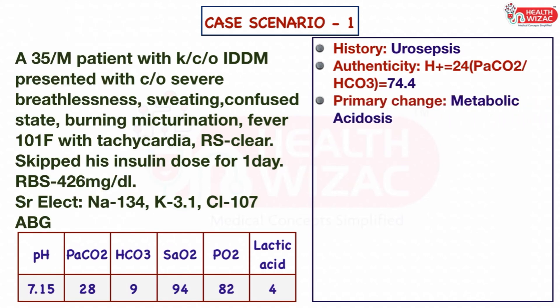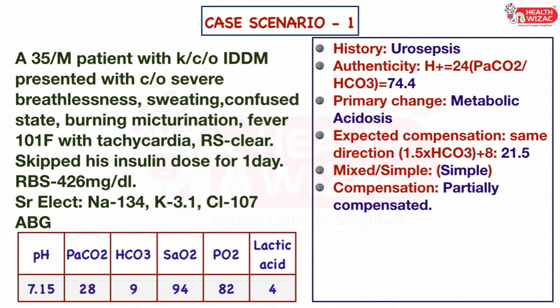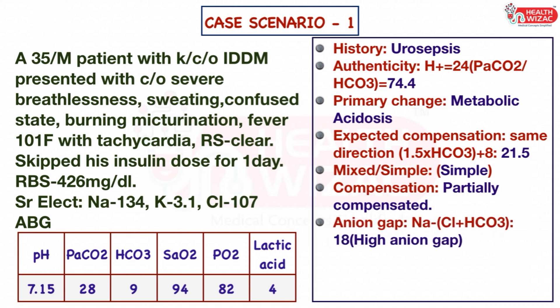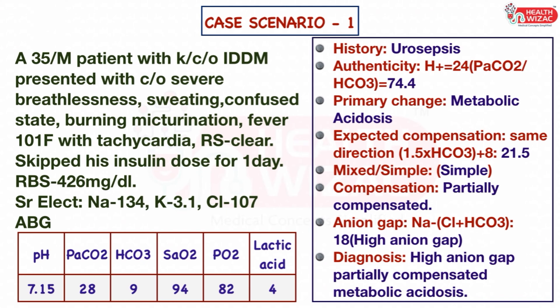Step 3 — primary change is metabolic acidosis as pH is less than 7.35. Step 4 — compensation is happening in the same direction; the calculated fall in PaCO2 is 21.5, which does not match the PaCO2 level of the sample. Step 5 — the disorder is simple as the same direction rule is followed; fall in bicarbonate is compensated by fall in PaCO2. Type of compensation is partially compensated as all three parameters — bicarbonate, PaCO2, and pH — are abnormal. Step 6 — calculated anion gap is 18, which is high. Final diagnosis: high anion gap, partially compensated metabolic acidosis.